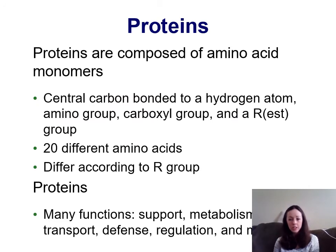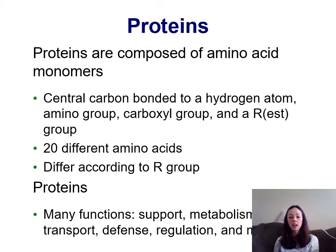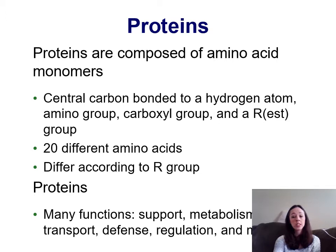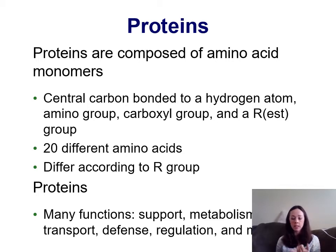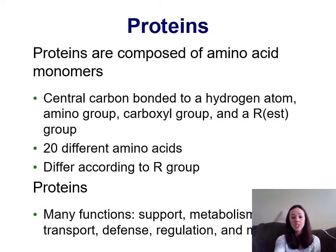Proteins don't contain as many carbons as our previous molecules. Instead, they contain just one carbon bound to four different functional groups. Each amino acid will have an amino group, a carboxyl group, a hydrogen atom, and a different R group which stands for 'rest.' The 20 different amino acids our body uses differ just based on that R group. Proteins have many different roles within the body — support, metabolism, transport, defense, regulation, and many others.